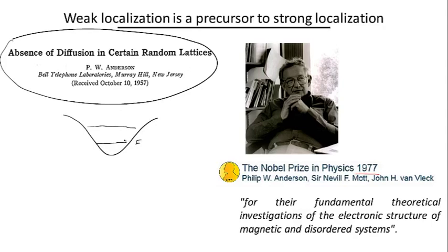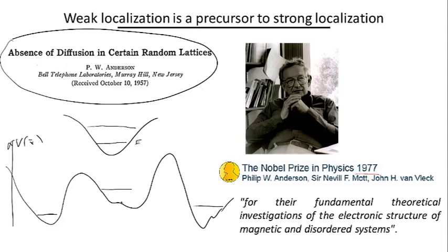And so the essence of the theory of Anderson if it can be summarized in a few seconds is that in a random landscape of such potential wells, so this is V of R, the energy levels that electrons are going to acquire are not going to match each other. And so they're not going to be able to move, hop from well to well because of the energy conservation. And this would completely suppress conductivity and this will lead to the strong localization.